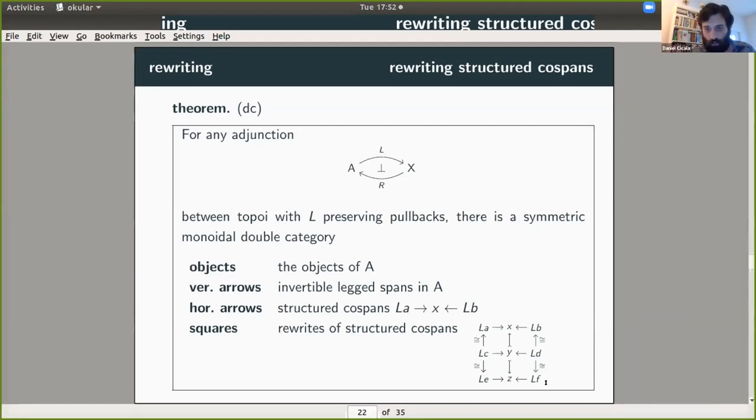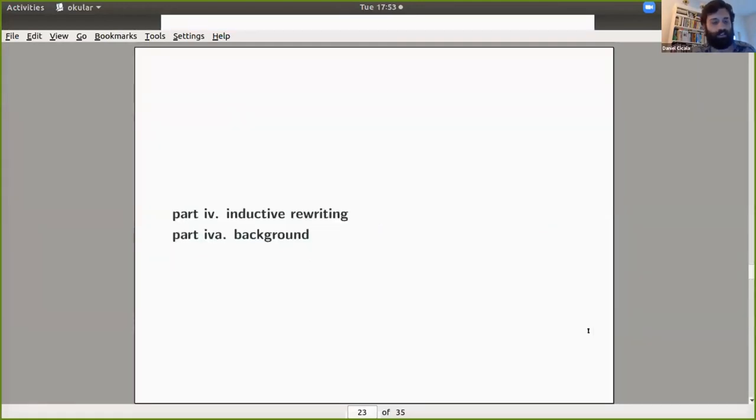And so then we have the squares, which are all possible rewrites of structured cospans. So grammars aren't getting into the mix here, they'll come in later. But here's the square down here, and then you can notice that if we put two squares side by side, essentially what that's doing is saying that we're rewriting the part of a composite system in two different places simultaneously, or we can stack these squares on top of each other. And that's like applying two different rewrite rules. Okay. So we get this nice double category.